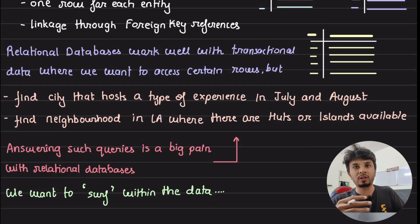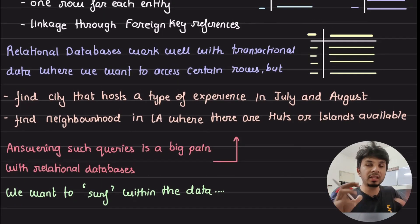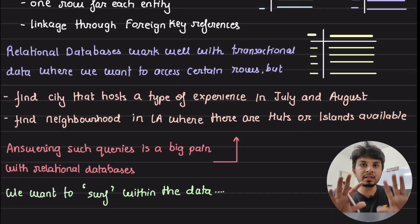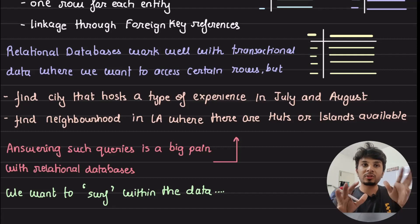Another query would be: find neighborhoods in Los Angeles where there are huts or islands available. So here you are going for a state type in a particular city, in the neighborhood of a particular city. So answering such queries with traditional relational databases is a big pain. So that is where, like, here if you look at this, we would want users to have enriched exploration experience.